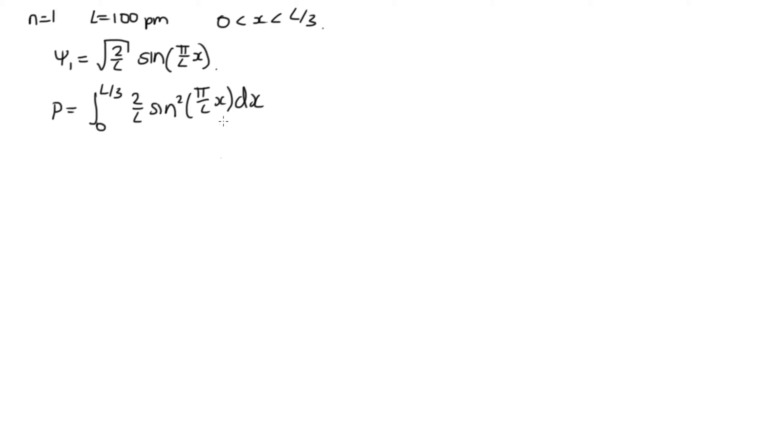So if we can evaluate this, then we know the probability that it's in this region here. We've got a sine squared function here, so we'll just need to use the standard integral that the integral of sine squared ax dx is equal to x over 2 minus sine of 2ax over 4a.